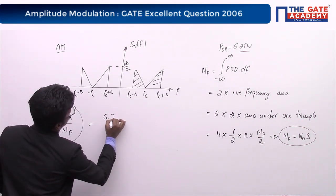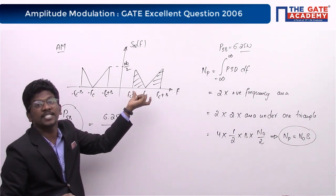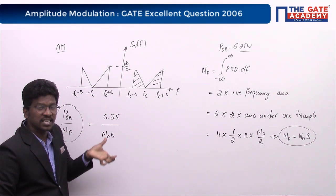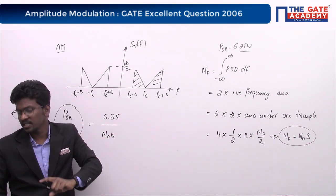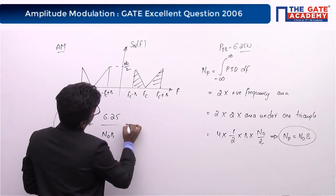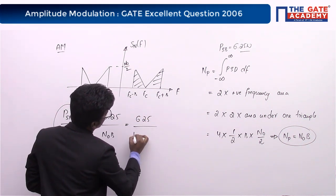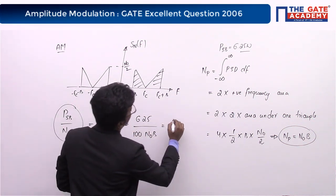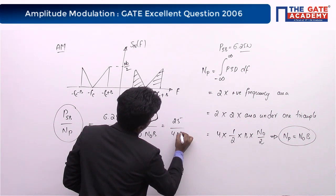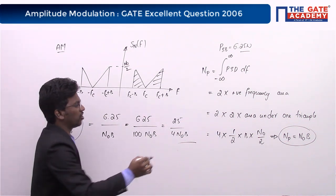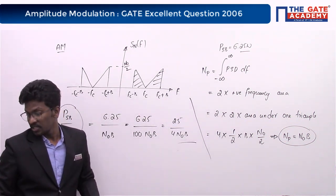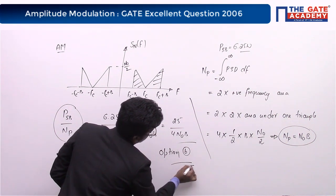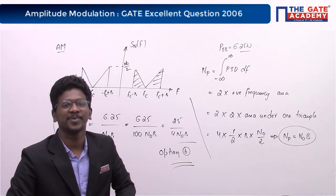Now we have sideband power = 6.25 W from the first question, and noise power = N₀B. The ratio is 6.25 / (N₀B). Since 6.25 = 25/4, this simplifies to 25 / (4N₀B). Looking at the options, this matches option B. Therefore, option B is our answer. Thank you for watching.